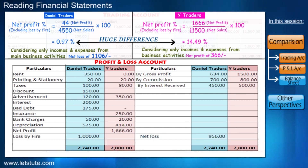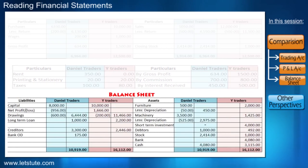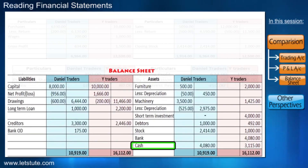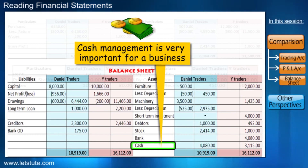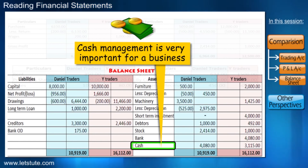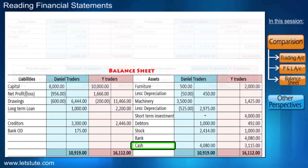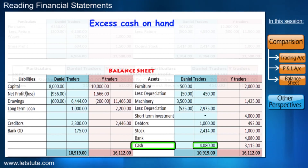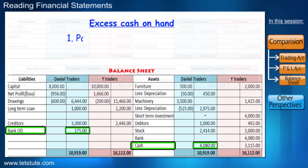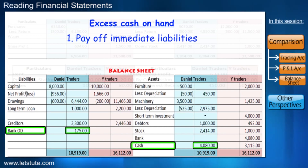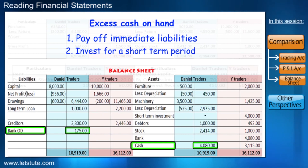Let's check the balance sheet now. Talking about cash management — this is something very important in any business. A lot of your income and expenses depend on how well you manage your cash. Daniel has cash on hand of 4,080, which is actually a lot. On the other hand, he has a bank overdraft. If he could have paid off the bank overdraft or invested some amount short-term, he would have also got some income. Keeping a lot of money in hand is not really helping.